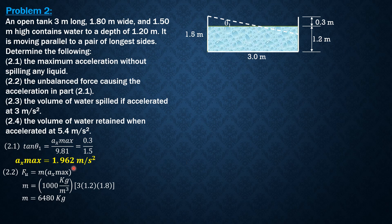So the mass is 6,480 kg times acceleration 1.962 meters per second squared. Let's convert to kilonewtons by dividing by 1,000. So Fe is 6480 times 1.962 over 1,000. The unbalanced force equals 12.71 kilonewtons.